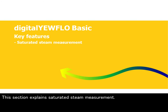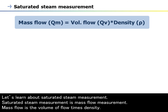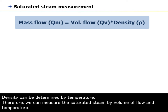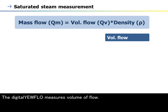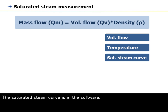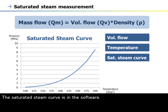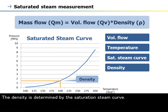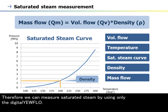This section explains saturated steam measurement. Saturated steam measurement is mass flow measurement. Mass flow is the volume of flow times density. Density can be determined by temperature. Therefore, we can measure the saturated steam by volume of flow and temperature. The Digital EarFlow measures volume of flow. A built-in temperature sensor measures temperature. The saturated steam curve is in the software, and the density is determined by the saturation steam curve. Therefore, we can measure saturated steam using only the Digital EarFlow.